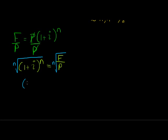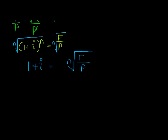So on the right-hand side, I'm left with 1 plus i, but because I only have the bracket left, I don't have the exponent left anymore, I don't need to write the bracket. I've got 1 plus i equal to the nth root of my future value divided by my present value. And then finally, just subtract the 1 on both sides to get i on his own. So i is equal to, and there you see, you can be so glad.